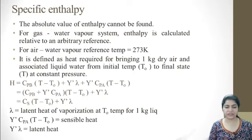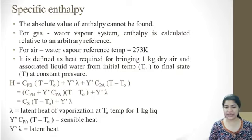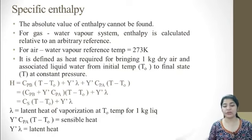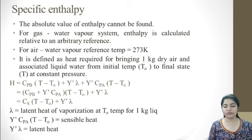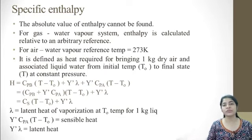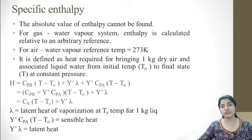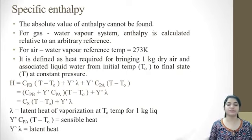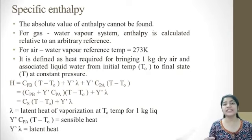So what is specific enthalpy here? It is defined as the heat required for bringing 1 kg dry air and associated liquid water from initial temperature T0 to final temperature T at constant pressure. You need to find your enthalpy at temperature T, where T0 is your reference temperature. At reference temperature — 0 degrees Celsius — your enthalpy is always zero. CpB is the specific heat of your dry air.